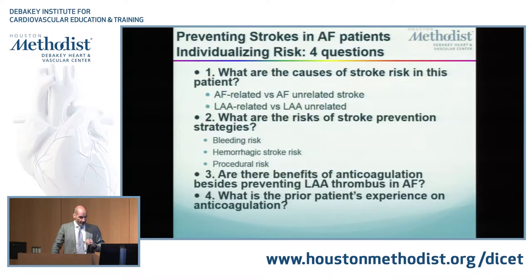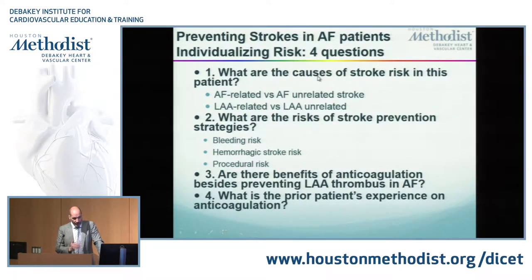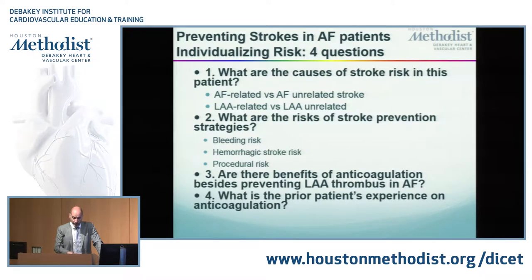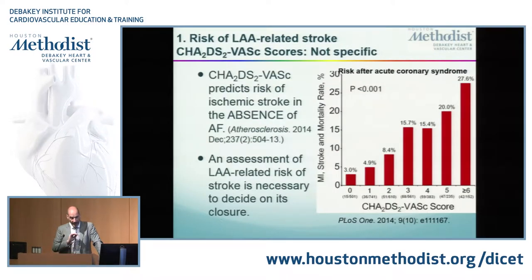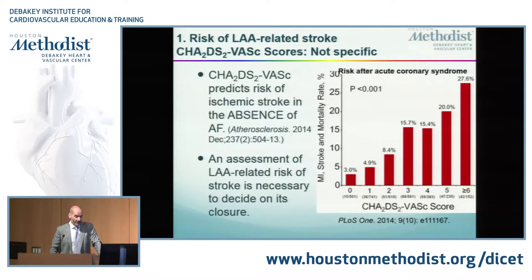So, four questions, and this can be a little obscure, but in a given patient I need to assess the causes of stroke risk that come from the appendage versus not from the appendage. You may have a high CHADS-VAS score and no AFib, and the CHADS-VAS score still predicts bad things — mortality, MI, stroke — even in the absence of AFib. So it's a nonspecific system.